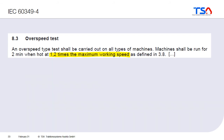To check if the machine is mechanically okay, an overspeed test is conducted. This is always done at 1.2 times the maximum working speed, and afterwards the machine is usually disassembled and checked.